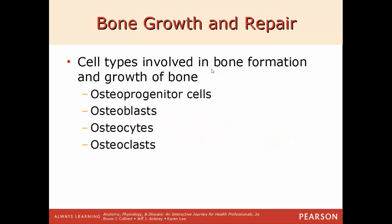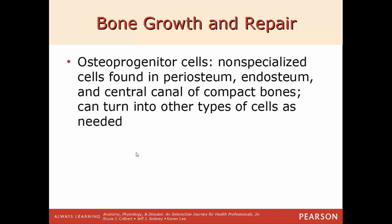The cell types involved in bone growth include osteoprogenitor cells, osteoblasts, osteocytes, and osteoclasts. Osteoprogenitor cells are non-specialized cells found in the periosteum, endosteum — the innermost lining of the medullary cavity — and within the central canal of the compact bones. These can turn into other types of cells as needed; they haven't been specialized into one of the other three types yet.